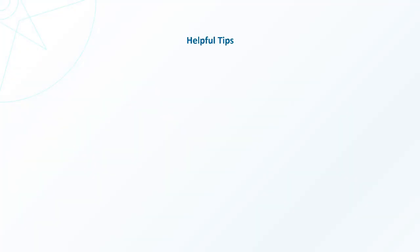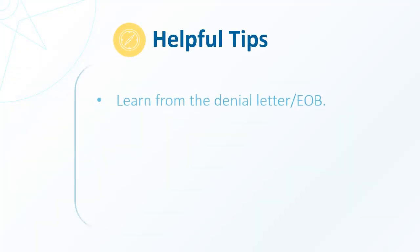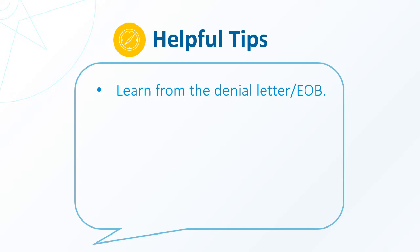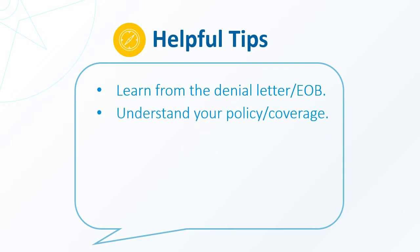To begin, learn everything you can from the denial letter or explanation of benefits: What was the reason for the denial? What are the appeals process and deadlines? Who can submit the appeal? How do you submit your appeal, and what is the timeline? Then review your policy to be sure you understand what is covered and not covered. If you need help or more information, contact your insurance plan for an explanation.